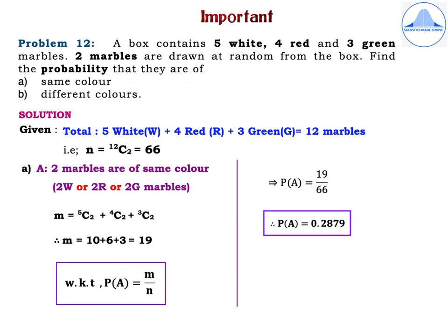Problem 12. A box contains 5 white, 4 red and 3 green marbles. 2 marbles are drawn at random from the box. Find the probability that: first subdivision, they are of same colour; second subdivision, different colours. Write given: total is 5 white plus 4 red plus 3 green, which is equal to 12 marbles. Out of these 12 marbles, 2 marbles are drawn at random, so N = 12C2 = 66.